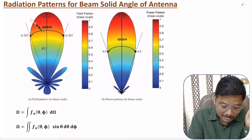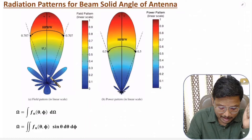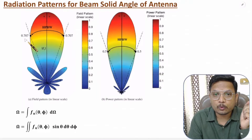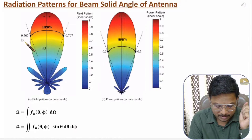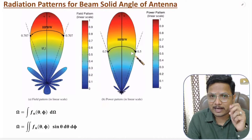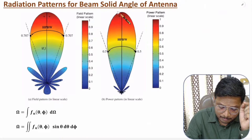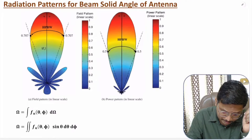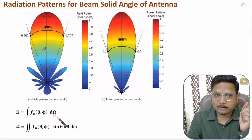The radiation pattern with respect to electric field is a bit broad over here with the major lobe. At half-power beam width, you see power is half. So when you represent the radiation pattern in form of power, it will be a bit sharper compared to the radiation pattern of electric field. Now, when you calculate beam solid angle, you will be integrating a function with respect to solid angle.